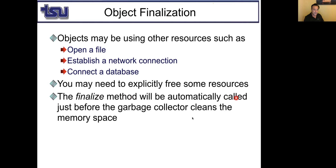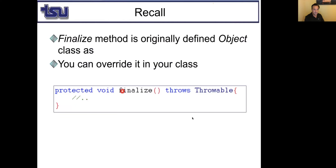The finalize method will be automatically called just before the garbage collector cleans the memory space. Since we don't know when the garbage collector will clean the memory space, practically we don't know when the finalize method will be called. But it will be called as soon as the object is deleted from memory for good. The finalize method is originally defined in the Object class — the mother of all classes — which has 11 methods, one of which is finalize.